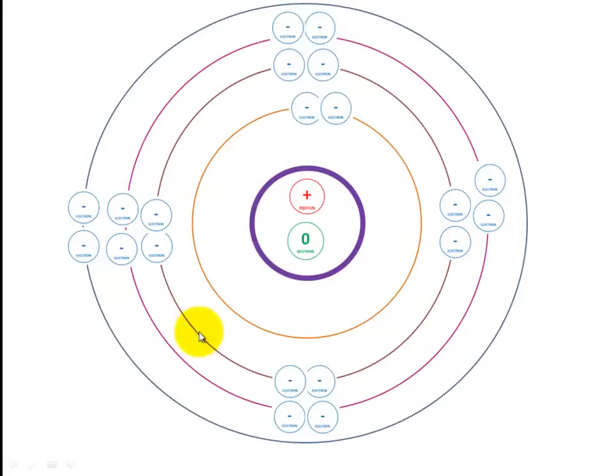Electrons are very small particles. Tiny, tiny small particles. Whereas Protons and Neutrons are a little bit bigger.